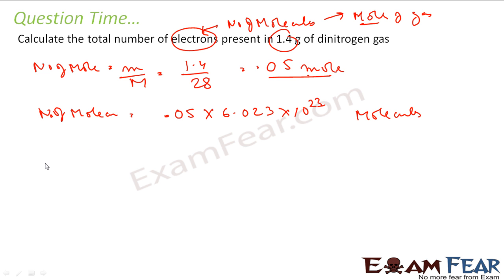So once I have number of molecules, I can find number of electrons. Number of electrons is what? 14 into number of molecules. Why? Because each molecule will have 14 electrons. This becomes 14 into this value. If you solve, this comes out to be 3.01 into 10 to the power 23. Electrons.